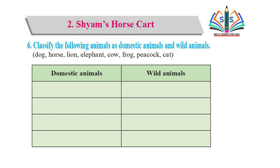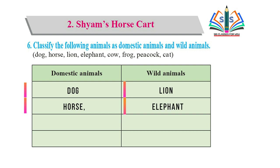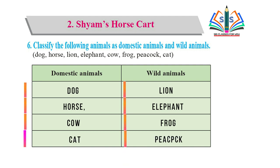یہاں پر ایک box دیا ہے جس میں ہمیں domestic animals کے نام لکھنے ہیں اور wild animals کے نام لکھنے ہیں۔ Domestic animals: dog - domestic animal, horse - domestic animal. Lion - lion جنگل میں رہتا ہے، اس لیے wild animal میں لکھیں گے۔ Elephant - wild animal, cow - domestic animal, frog - wild animal, peacock - wild animal, cat - domestic animal۔